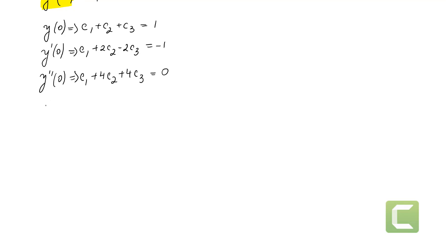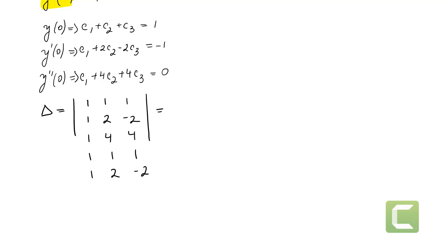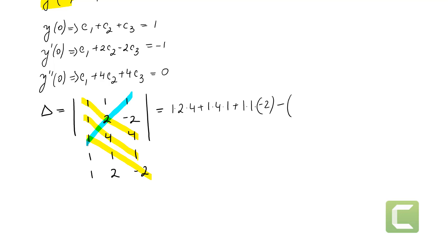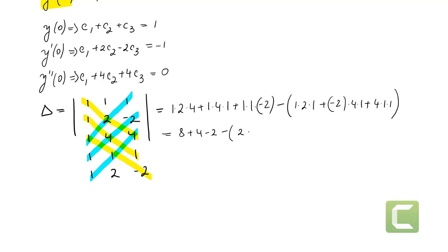We're going to use Cramer's rule. So delta equals the determinant with rows [1, 1, 1], [1, 2, negative 2], [1, 4, 4]. Using the Sarrus method, I copy the first two rows and multiply along the diagonals: 1·2·4 plus 1·4·1 plus 1·1·(negative 2) minus 1·2·1 minus (negative 2)·4·1 minus 4·1·1. That gives 8 plus 4 minus 2 minus 2 minus negative 8 plus 4, which equals 12.